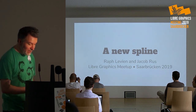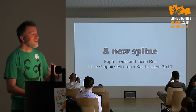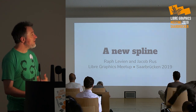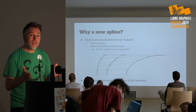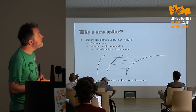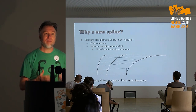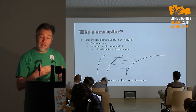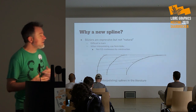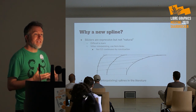Thanks everybody for coming. This is joint work with Jacob Ruse, who's here in the audience. Please, we'd love to talk to you after the session for all the open questions that remain, because this is still very much research work. First, I'd like to talk about why we even need a new spline — why is this an interesting problem to solve. This is mostly motivated by font design, but I think this spline has applications in other 2D illustration and perhaps other tasks like CAD and self-driving vehicles as well.